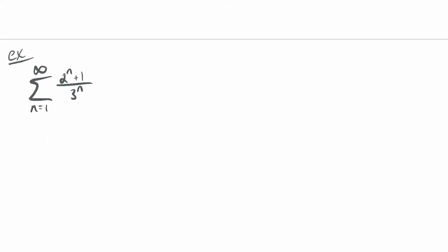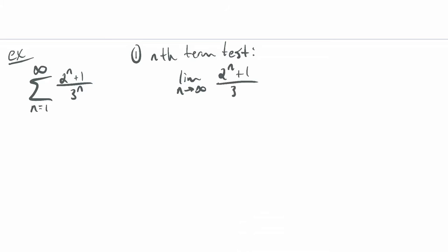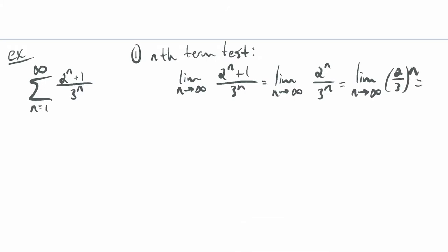Next example: the series as n goes from 1 to infinity of 2 to the n plus 1 over 3 to the n. First: nth term test. The limit as n goes to infinity of 2 to the n plus 1 over 3 to the n — since 2 to the n goes to infinity and 3 to the n goes to infinity, this is the limit of (2/3) to the n, which goes to 0 since the base is less than 1. Inconclusive, but I suspect this is close to a geometric series.